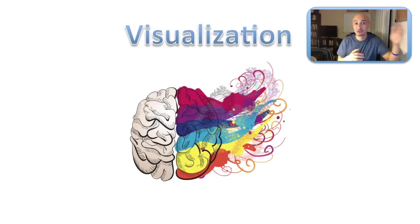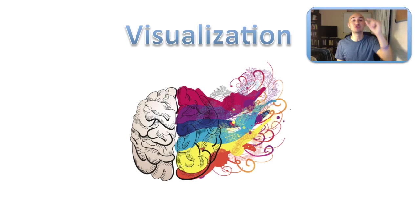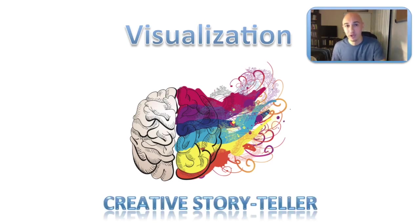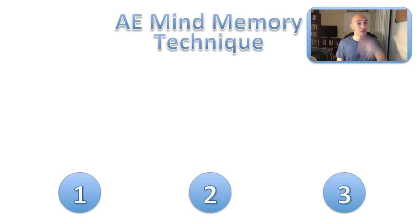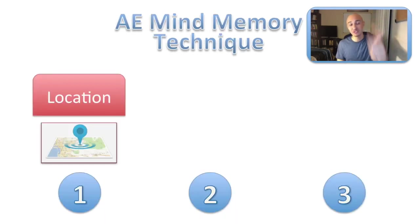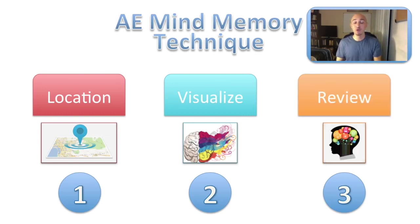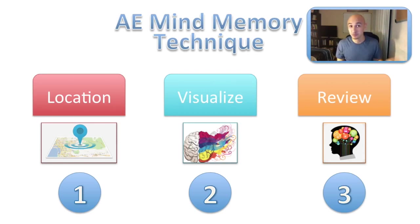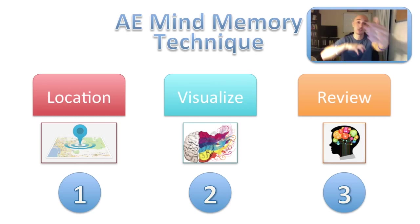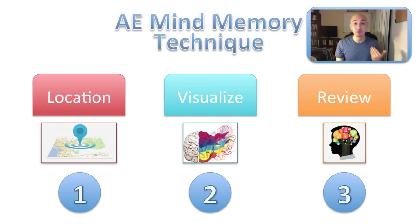The key to memorization is visualization. I teach my students at high schools and colleges that if you want to memorize anything quickly, you have to turn it into an image, into a story — we're creative storytellers from this point forward. There are three quick techniques: first is location, second is visualize, third is review. You need a location to store the information, you visualize the planets as images and store them on those locations, then you review to retain the information long-term.